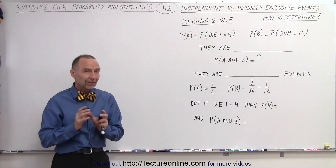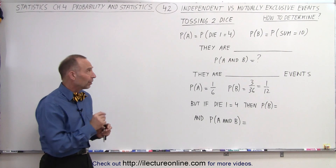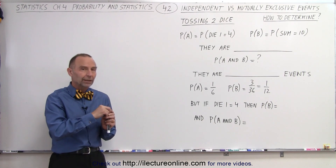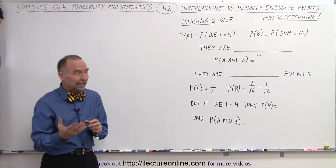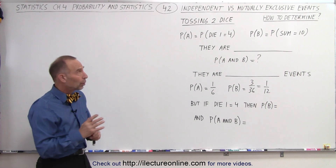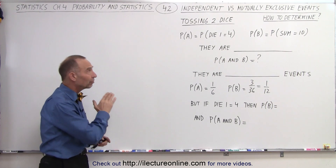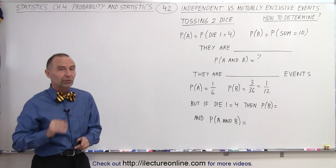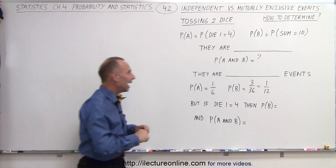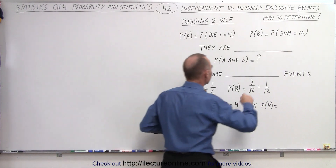These events can happen at the same time, because if one die is a 4, then the other die just needs to be a 6 in order to get a sum of 10. So they are not mutually exclusive — they can happen at the same time.